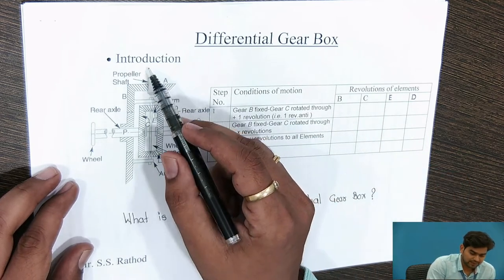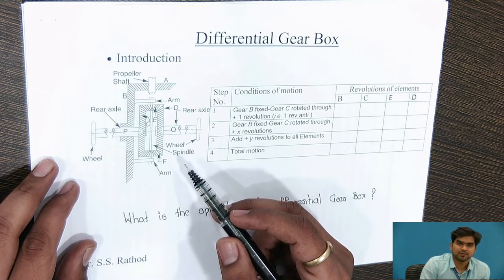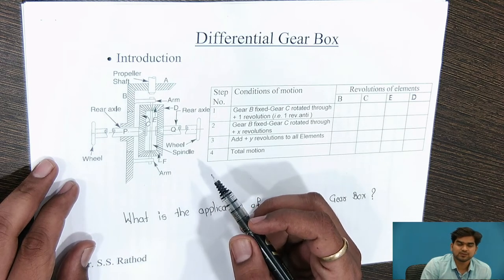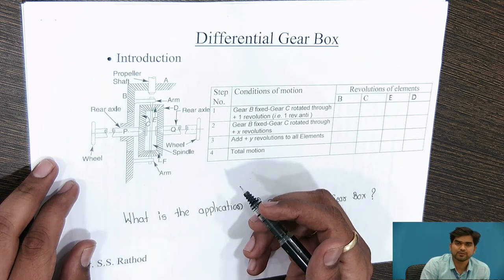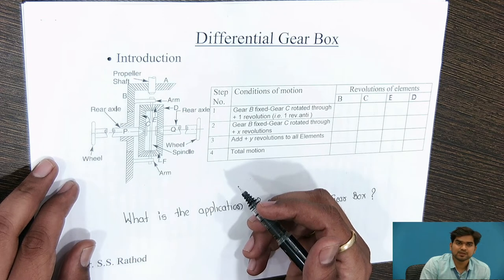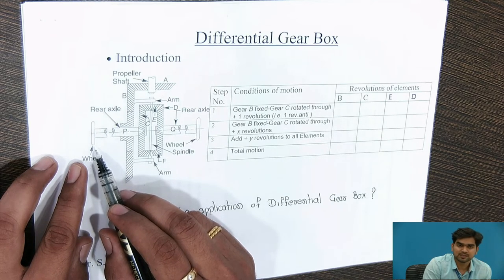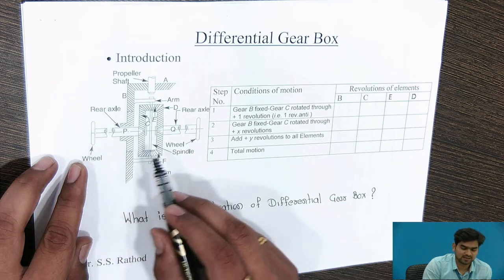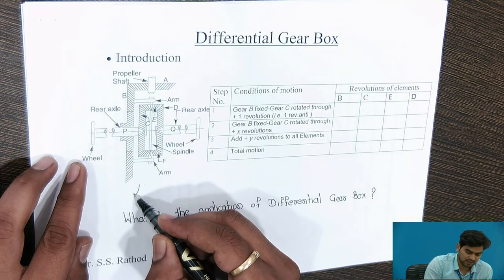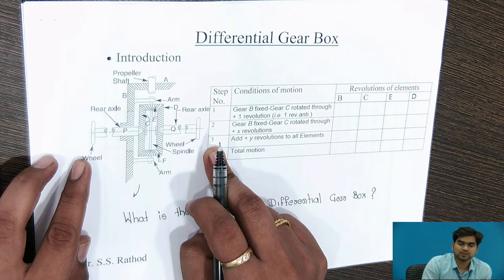This is the schematic diagram of the Differential Gearbox. We will discuss how the Differential Gearbox works. The Differential Gearbox is used for transmitting motion from the engine to the rear axle. The second and very important application is to vary the speed between the inner wheel and the outer wheel. When taking a turn, the speed of the inner wheel should be less than that of the outer wheel, because the inner wheel covers lesser distance than the outer wheel. This speed variation between the two wheels is achieved using the Differential Gearbox.